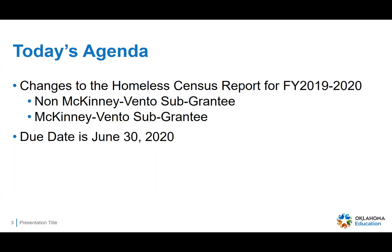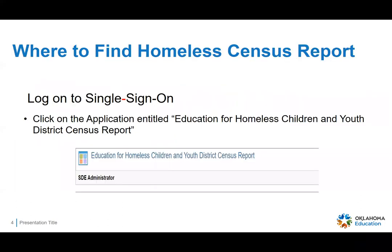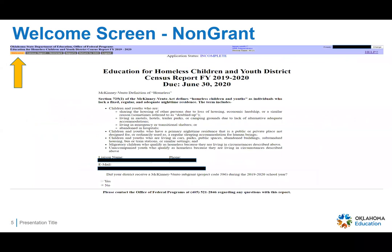Let's go ahead and get started. I've got some screenshots of what the Homeless Census Report looks like. You can find this on single sign-on — look in the applications for the one entitled Education for Homeless Children and Youth District Census Report. You'll open this application and we're going to look first at the welcome screen for those of you that do not have the McKinney-Vento sub-grant.